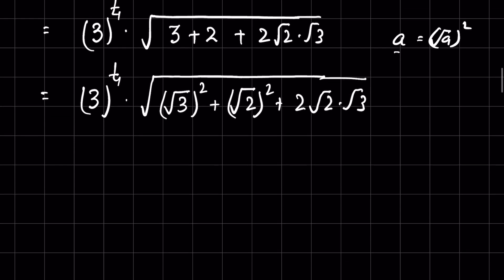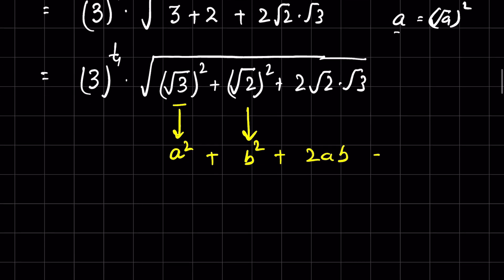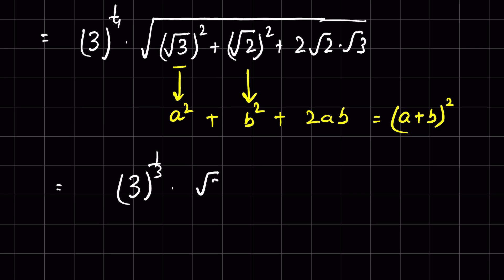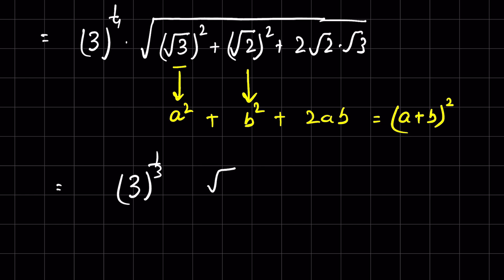Now, if we consider √3 as a and √2 as b, then we have a² + b² + 2ab, which is the algebraic identity equal to (a + b)². So we can write this as (√3 + √2)² under a square root, or equivalently as √((√3 + √2)²).